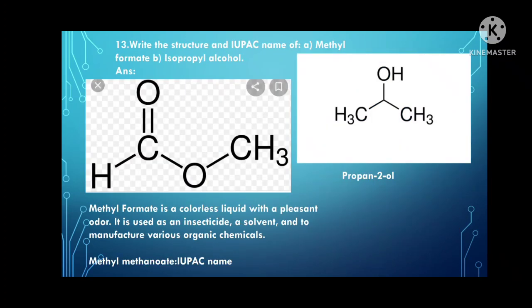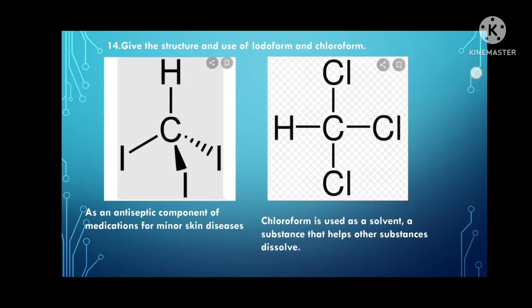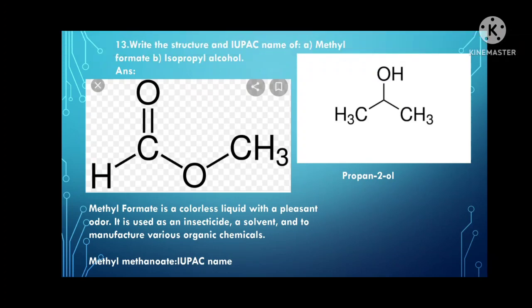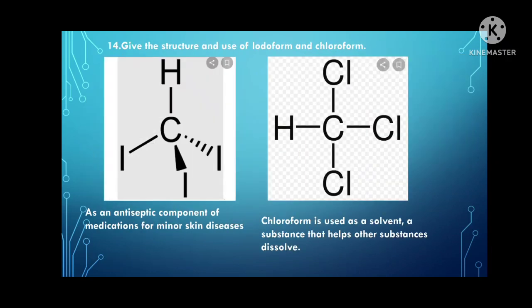Write the IUPAC name of methyl formate and isopropyl alcohol. The structure of methyl formate is shown. Methyl formate is a colorless liquid with a pleasant odor; it is used as an insecticide and in the manufacturing of various organic chemicals. Its IUPAC name is methyl methanoate. The IUPAC name of isopropyl alcohol is propan-2-ol.